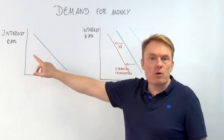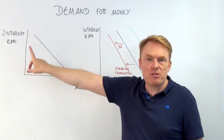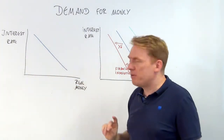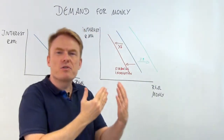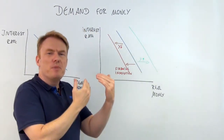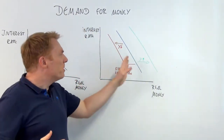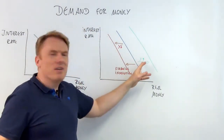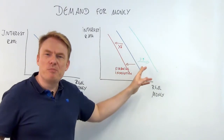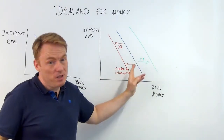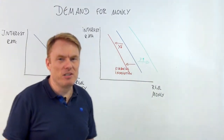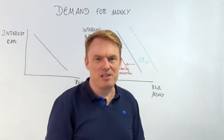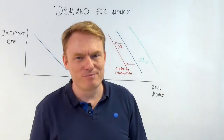To summarize: we've talked about the demand for money, the negative correlation between the interest rate and the demand for real money, and movements of the demand curve — what happens when real GDP rises or decreases, and when there is financial innovation. Thank you for watching.